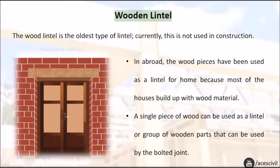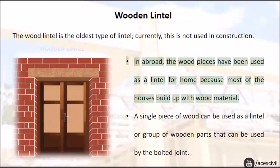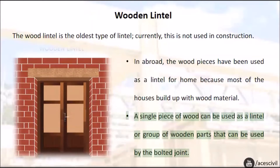Wooden Lintel. The wood lintel is the oldest type of lintel and is currently not used in construction. In some countries abroad, wood pieces have been used as a lintel for homes because most of the houses are built with wood material. A single piece of wood can be used as a lintel, or a group of wooden parts can be used joined by bolted joints.